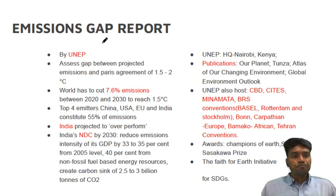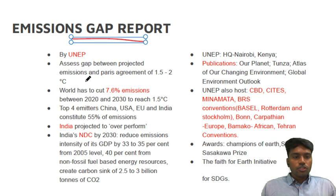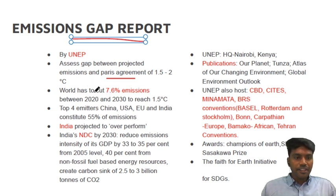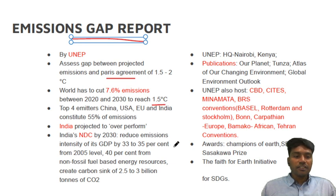The second category we will deal with is the Emission Gap Report, given by UNEP. What does it do? It assesses the gap between projected emissions — what is practically happening — and what has been agreed in the Paris Agreement, that is to limit warming to 1.5 to 2 degrees centigrade with respect to pre-industrial levels. The report says we have to cut nearly 7.6% of emissions to keep at 1.5 degrees centigrade. The top five emitters include India, so please focus on this area.